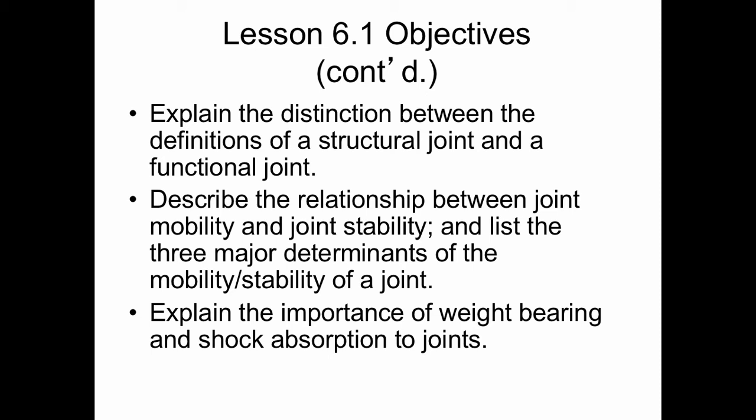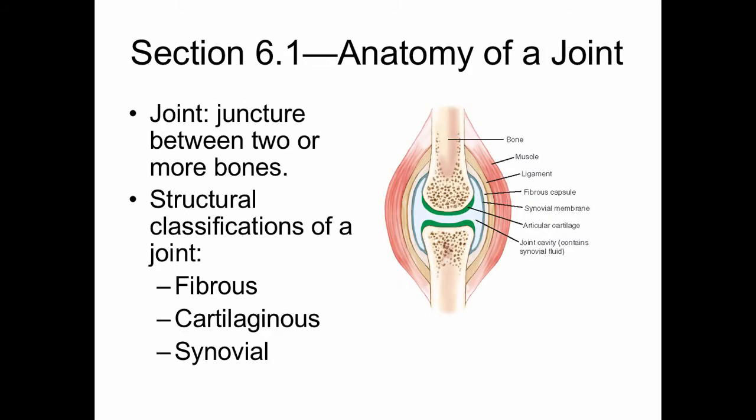Here are the additional objectives. The anatomy of a joint: a joint is a juncture between two or more bones. It has a structural classification — it can be fibrous, cartilaginous, or synovial. Another name for a joint is an articulation, basically where two bones come together. The components of a typical joint are bone, muscle, ligament, fibrous capsule, synovial membrane, articular cartilage, and the joint cavity.